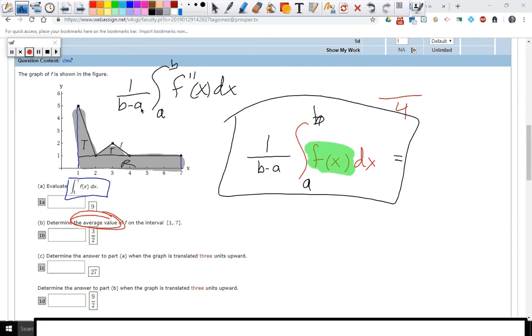So when it asks the average value of f, the f function goes in there. And for this specific one, it's going to look at one to seven, and seven minus one. It would be one-sixth of that integral. So you're just going to divide part A by six.